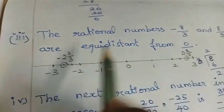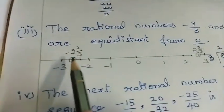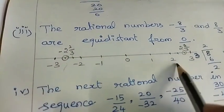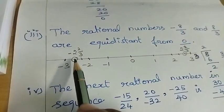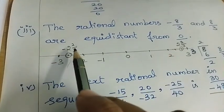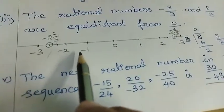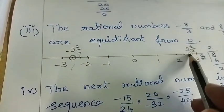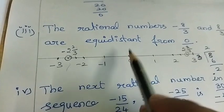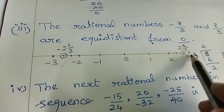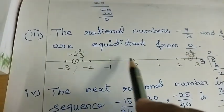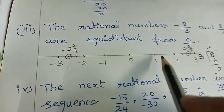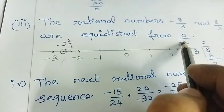Minus 2 and 2 by 3 is equal to 0. Converting 8 by 3 to mixed fraction: it is 2 and 2 by 3. So the distance from 0 to 2 and 2 by 3 equals the distance from 0 to minus 2 and 2 by 3. Therefore the answer is 0.